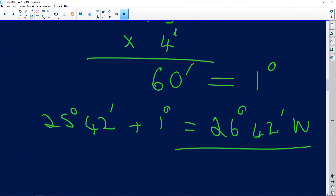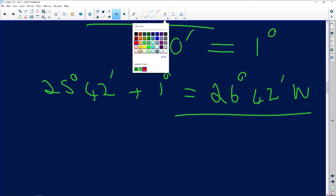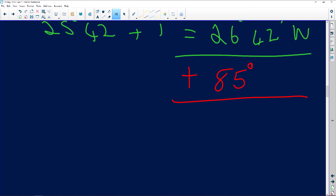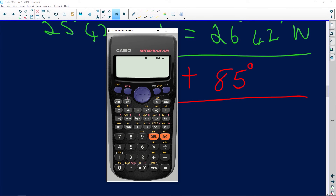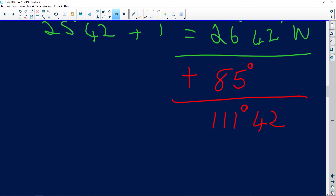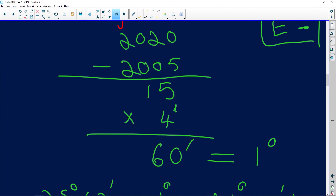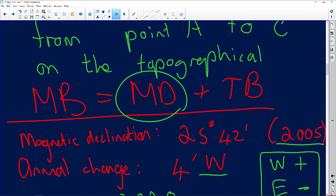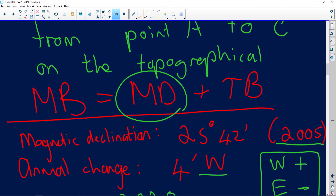The protractor gives us 85 degrees. So the true bearing from point A to point C is 85 degrees. Now we combine: magnetic bearing = magnetic declination plus true bearing. That's 26 degrees 42 minutes plus 85 degrees, which equals 111 degrees 42 minutes west. As you can see, magnetic bearing consists of magnetic declination plus true bearing — we drew a north-south line, placed the protractor on north, moved clockwise, and got 85 degrees. Hopefully that answered your question.